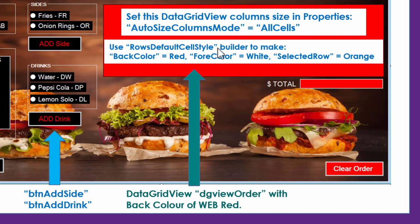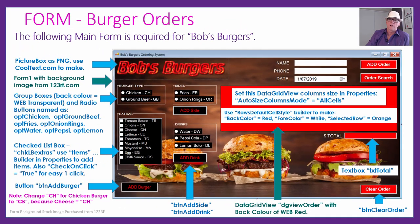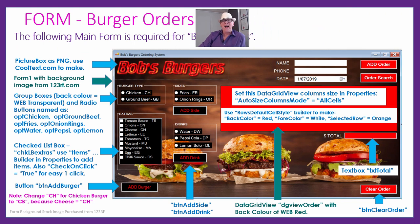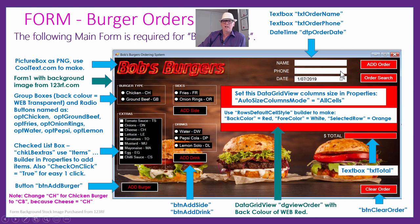The text box that displays the order total in dollars is called TXT Total. Down at the bottom there's BTN Clear Order. Up top we have TXT Order Name and TXT Order Phone. There's also a date-time picker — find it in the toolbox and drag it out; it will show the date. In its properties, make sure the format is set to Short so it only shows the date and not the time.